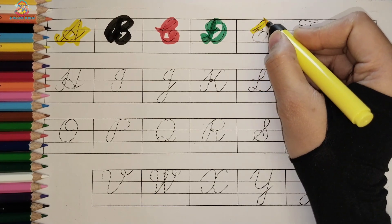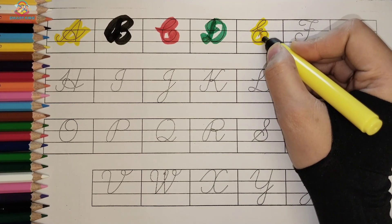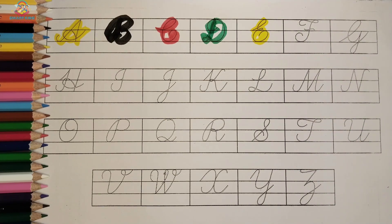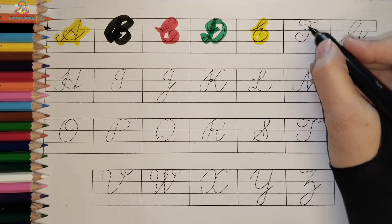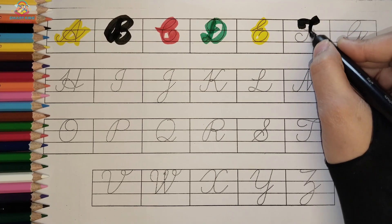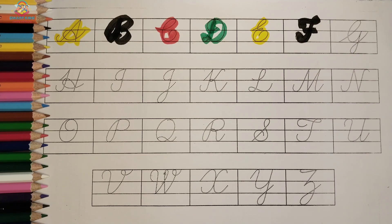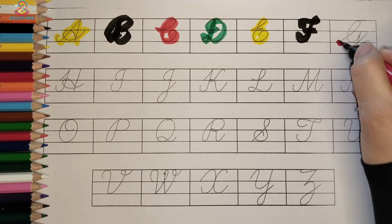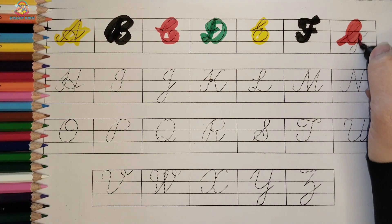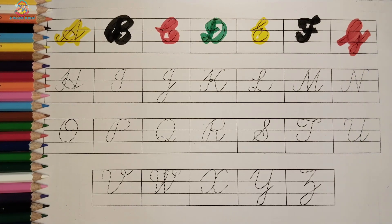E, E for Elephant, E for Elephant, Yellow Color. F, F for Fish, F for Fish, Black Color. G, G for Goat, G for Goat, Red Color.